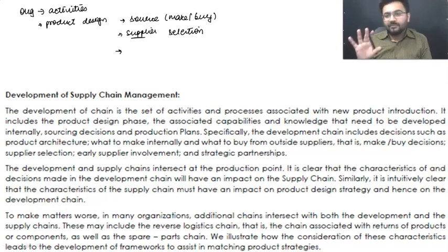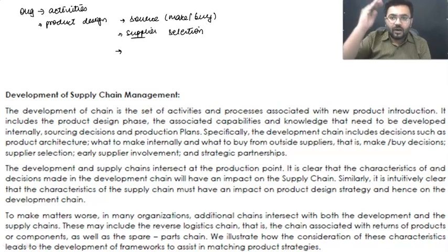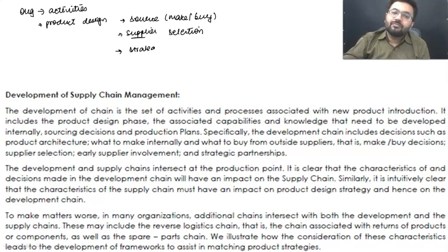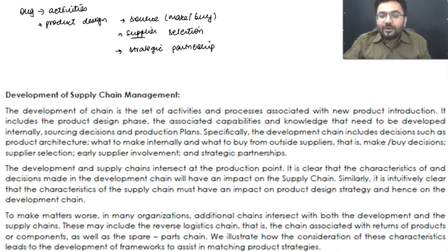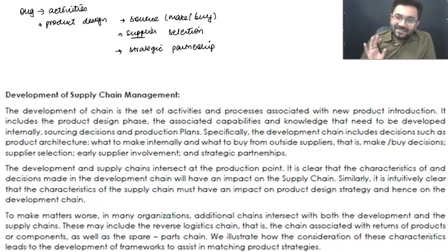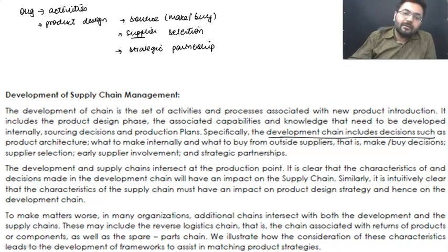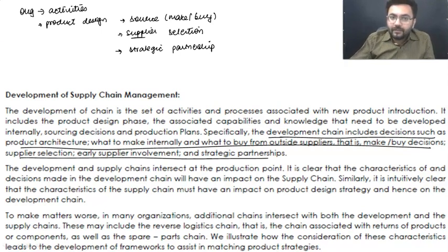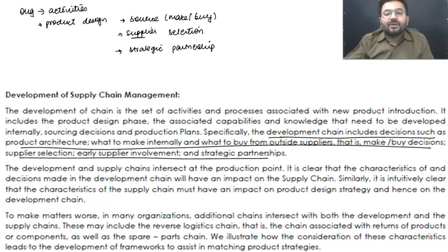A company may have orders like Tesla or may shut down like Nokia or Kodak. You cannot predict future — nobody in business can say with 100% certainty how much they will grow or fall. It's all about make or buy decisions, then supplier selection, and strategic partnerships. And whatever decisions you have made in your development chain is going to impact your supply chain.